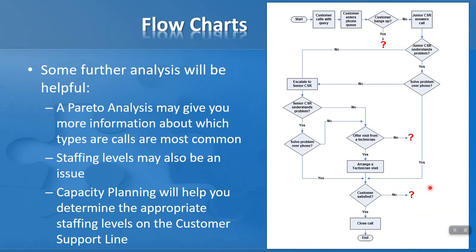So some further analysis, once you have done this, might be helpful. For example, a Pareto analysis, the subject of one of our previous lessons, might give us more information about which types of calls are most common. Staffing levels could be an issue for the organization. And perhaps capacity planning, the number of people on the support line at any particular time, will help us determine the appropriate staffing levels for the customer support line. So pause the video here to spend some time working your way through this process or flowchart here, and try and understand how information is flowing through it, and what happens when the different decisions are made. So pause the video now if you'd like to examine that for a while.